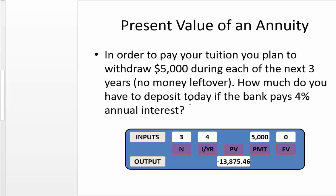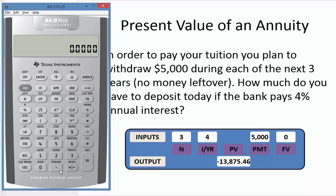How much do you have to deposit today if you can earn four percent interest on those funds? We know that N, the number of periods, is three and the interest rate is four percent. The goal is to find the present value. Since the five thousand dollar withdrawals are equal periodic payments, they are part of an annuity, so we input five thousand as the payment. We have no money left over, therefore our future value is zero.